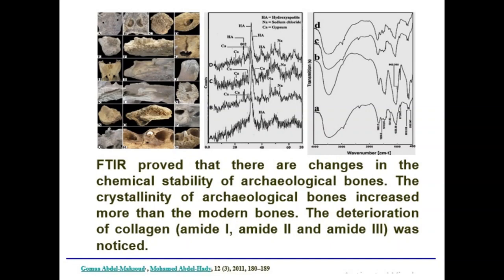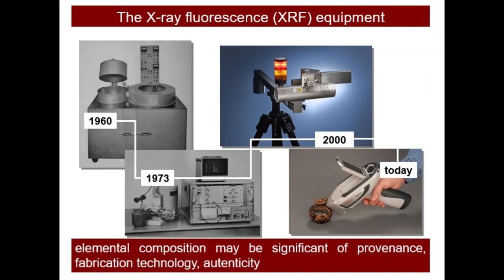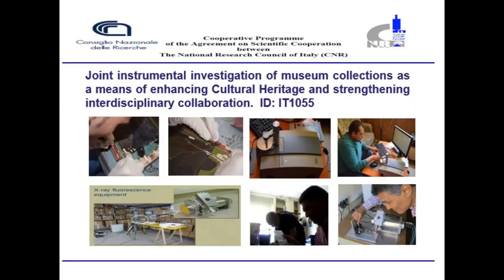FTIR is not the only technique — X-ray fluorescence (XRF) can be applied as well. Looking at the historical background for XRF: in 1960 it was very large, but today it is handheld, making it a very powerful technique for elemental composition analysis, especially significant for metal artifacts. It is also a non-destructive technique. We conducted joint work between our group at the National Research Centre and the group of Marco Ferretti at the CNR, applying both FTIR and XRF to study Coptic icons and metal artifacts in Italy, as well as Coptic icons in Egypt.